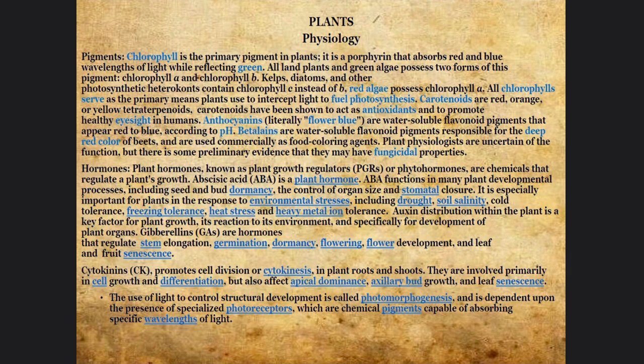Light is not only important for plants because it regulates photosynthesis, but it also regulates photomorphogenesis — that is the control and development of the plant itself. The photoreceptors, normally found either on the cell membrane towards the outside or inside the cell membrane if it's an internal signal, they specify depending on a specific pigment.